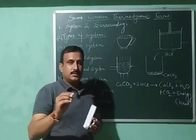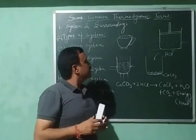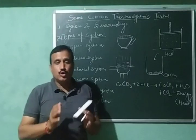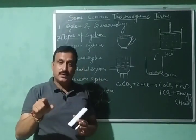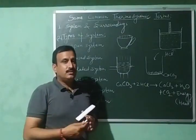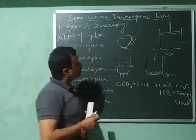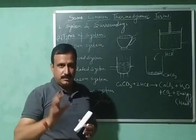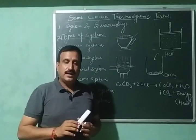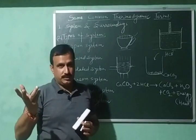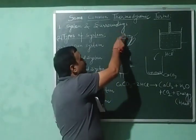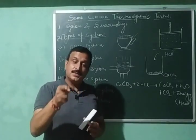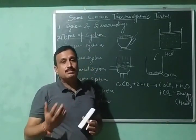Now let us look at the types of systems. The first is the open system. A system is said to be open if it exchanges both energy and matter with the surroundings. For example, consider a hot cup of tea. After some time its temperature decreases, meaning the tea has lost heat to the surroundings. At the same time, vapours are also escaping — vapours are matter. So this cup of tea is exchanging heat, which is a form of energy, as well as matter with the surroundings. This is an example of an open system.